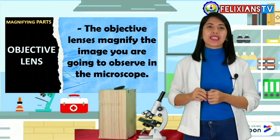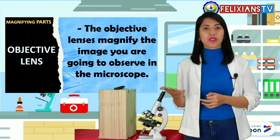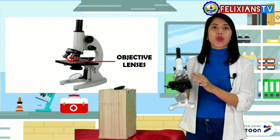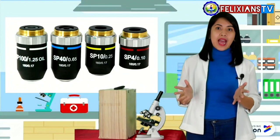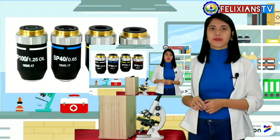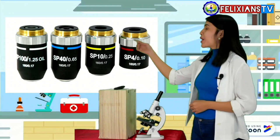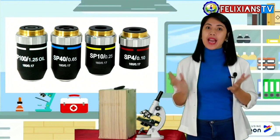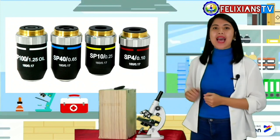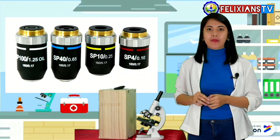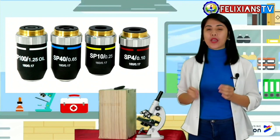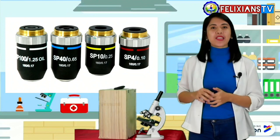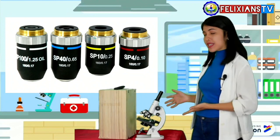Next, the objective lenses. The objective lenses magnify the image you are going to observe in the microscope. So, these are the objective lenses. The objective lenses also have their corresponding number of magnifications, but each lens has different magnifications. The red one is the scanner, which is four times. The yellow one is the low power objective or the LPO, which is ten times. The blue one is the high power objective or the HPO, which is 40 times. And the white one is the oil immersion objective or the OIO, which is 100 times and is used to observe bacteria. So, different microscopes have different magnifications.